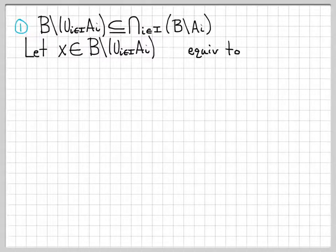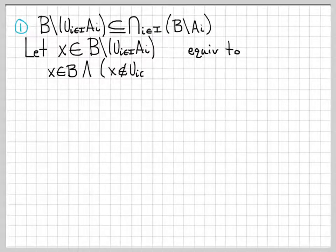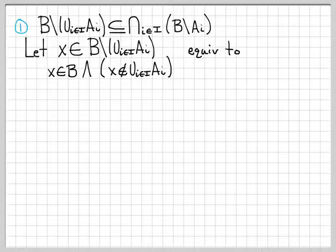So what is this equivalent to? Let's start manipulating. This means that X is in B and X is not in the second set, because that is the definition of a difference. So this is equivalent to: X is in B, and X is not in the union of all the sets A_i over the indices i in capital I. We've just replaced our original statement with a logically equivalent statement.